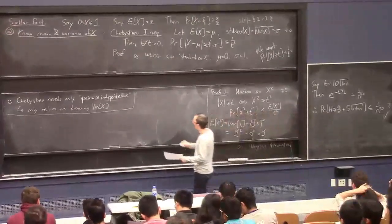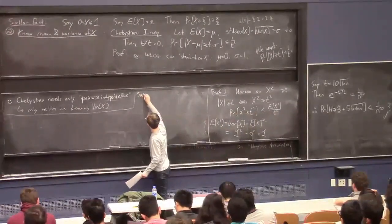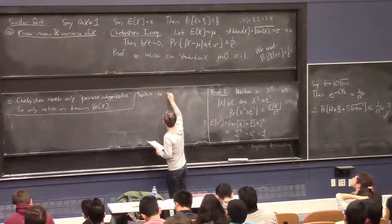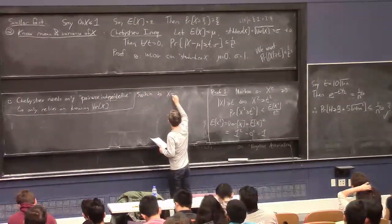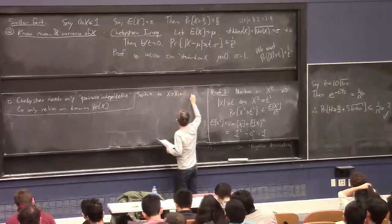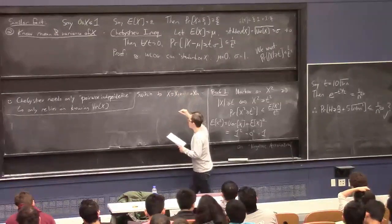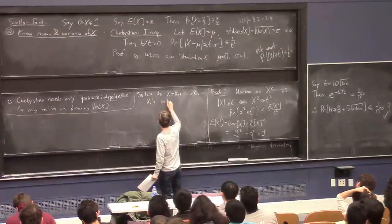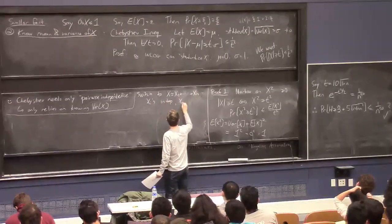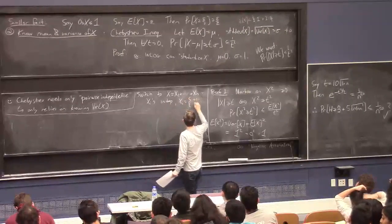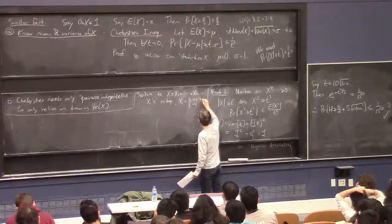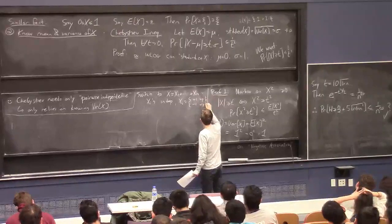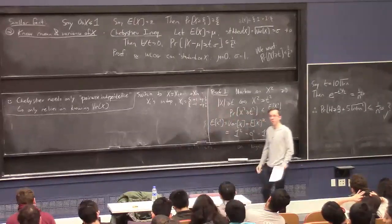Let me explain what I mean by that. To make things nicer, let's switch to the plus or minus 1 version of this scenario. So let's analyze x as the sum of n independent random variables which are Rademacher's — meaning they're plus 1 or minus 1 with probability one half each.